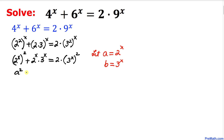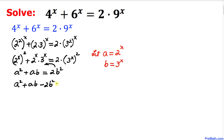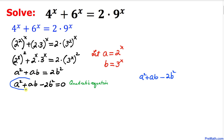Moving 2b^2 to the left-hand side gives us a^2 + ab - 2b^2 = 0. This is a quadratic equation which we can solve by factoring.